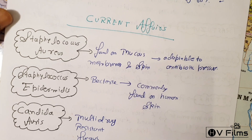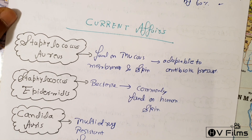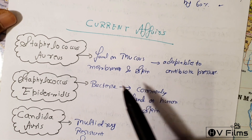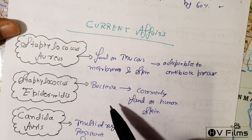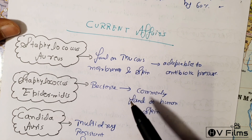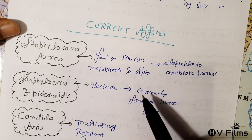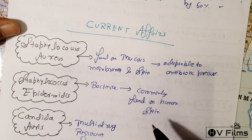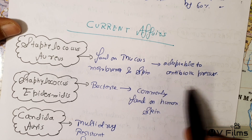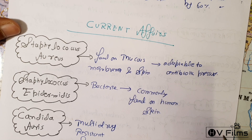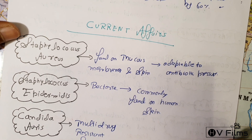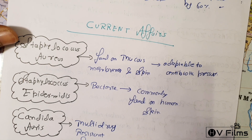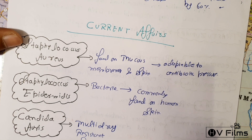Staphylococcus aureus is found on mucous membranes and skin. It is extremely adaptable to antibiotic pressure and is the first bacterium in which penicillin resistance was found. Consequently, methicillin replaced penicillin as an antibiotic. MRSA — methicillin-resistant Staphylococcus aureus — was first detected in 1961.